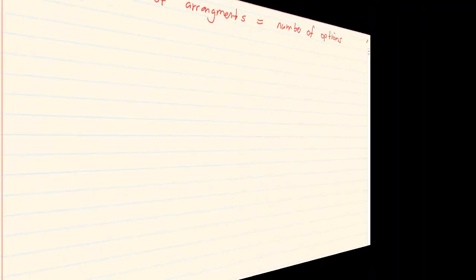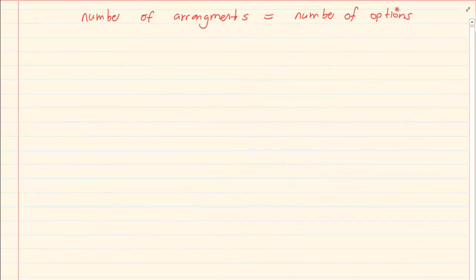But what happens when the number of arrangements equal to the number of options. So what I am saying is let's say you have got a five letter word Fanta. Now you have a five letter word so the number of arrangements for each one can be five isn't it? If I said you could repeat it. And the number of options is also five. But what happens when I say you cannot repeat it.